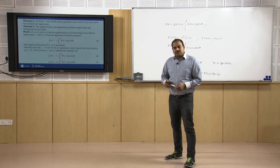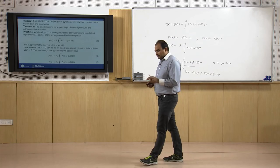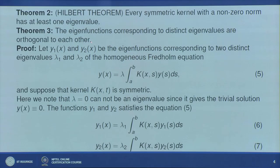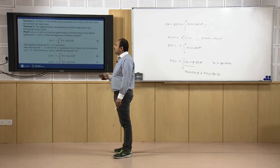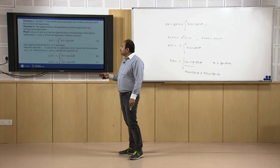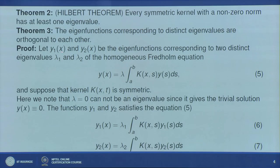Now we want to discuss the properties of eigenvalues and eigenfunctions. The first very important property is: eigenfunctions corresponding to distinct eigenvalues are orthogonal to each other. Let us take two distinct eigenvalues λ₁ and λ₂ with λ₁ ≠ λ₂, and corresponding eigenfunctions y₁(x) and y₂(x), and show they are orthogonal.